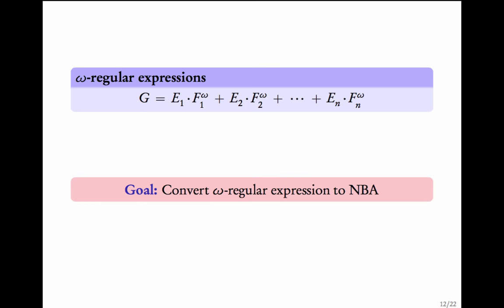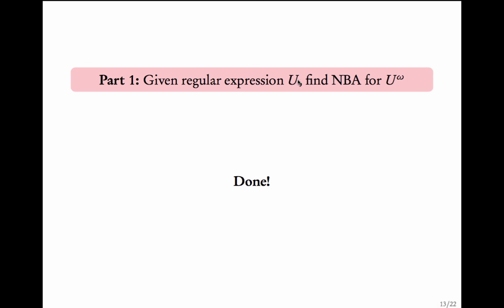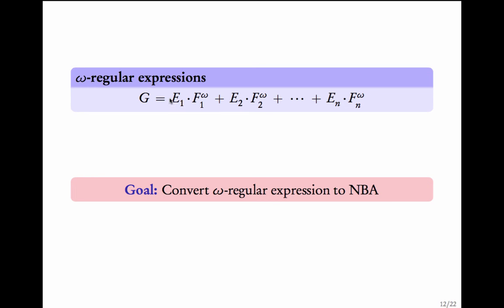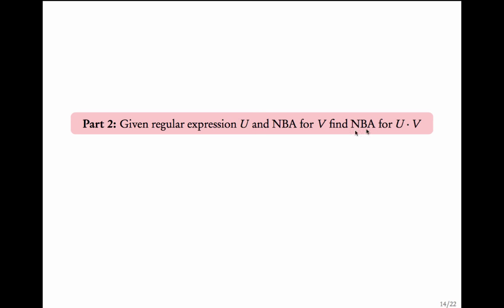We are done with the first step. Given a regular expression u, we know how to get the NBA for u^ω. Part 2: given a regular expression e1 and the NBA for f1^ω, how do we form the NBA for the concatenation e1·f1^ω? We need to read some word in e1 and then start reading the NBA for f1^ω. Given an NFA for u and an NBA for V, we want the NBA for u·V.